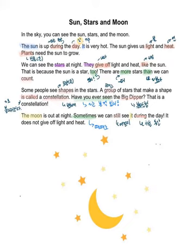We can see the stars at night. They give off light and heat, like the sun. That is because the sun is a star, too. There are more stars than we can count.